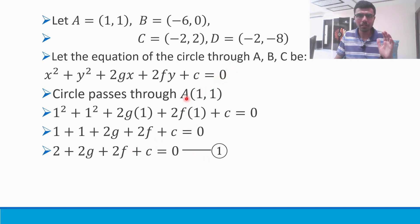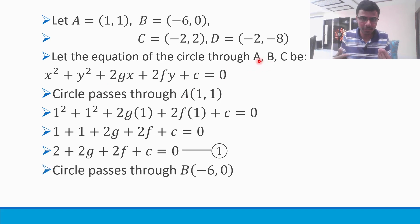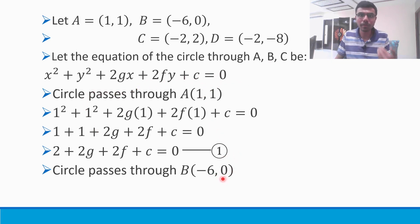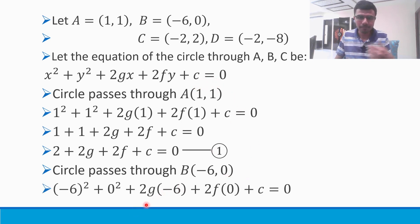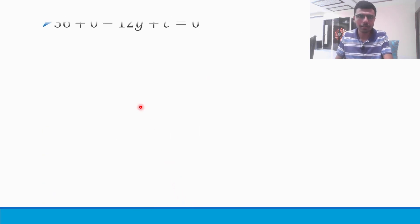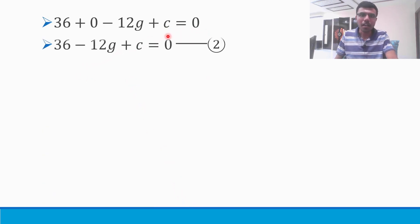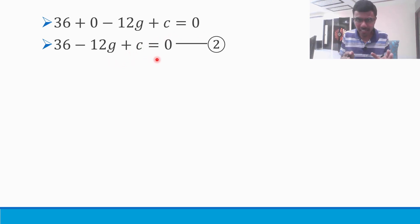Now, in place of x and y, put B's coordinates (-6, 0), because the circle passes through B as well. Substituting: (-6)² + 0² + 2g(-6) + 2f(0) + c = 0, which gives 36 - 12g + c = 0. This is my second equation.